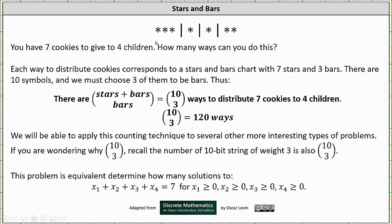So looking at the stars and bars chart above in terms of the equation, this represents the solution where x1 equals 3, x2 equals 1, x3 equals 1, and x4 equals 2, which does give us a sum of 7 and satisfies the inequalities.